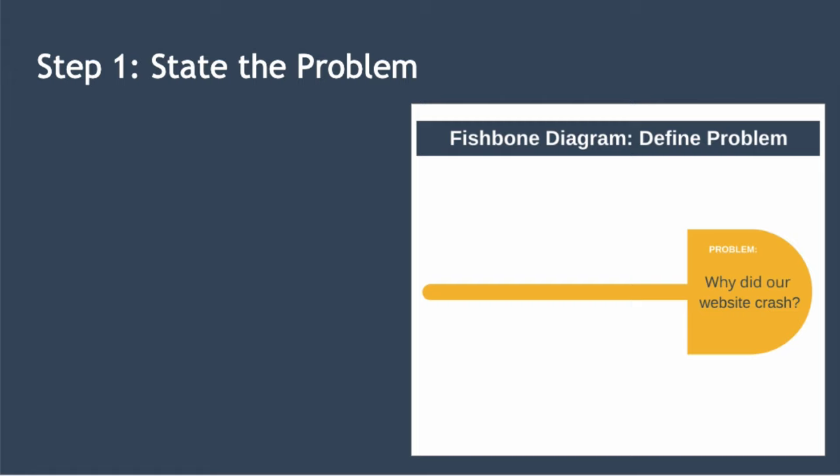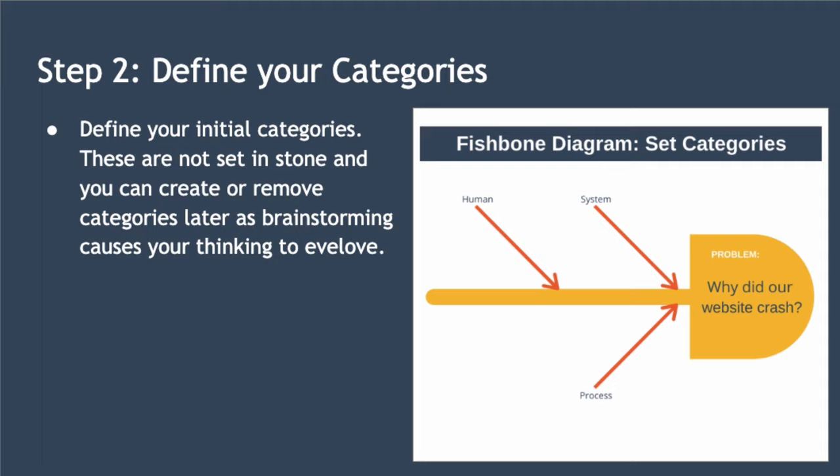Step two is to define the categories you will use to guide the brainstorming. These don't need to be set in stone and you can always create new categories or remove categories later as the brainstorming session causes your thinking to evolve. For our example, we decide to use the following three categories: System, to capture causes associated with the system itself; Process, to capture any process issues that might have caused the website to crash; and Human, to capture any potential human errors that may have caused the website to crash.